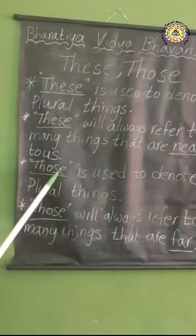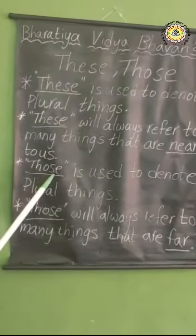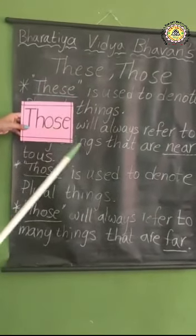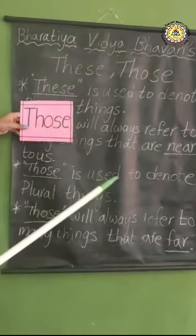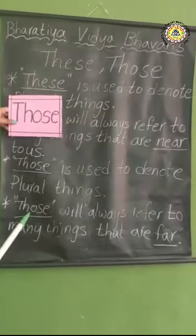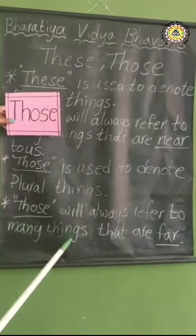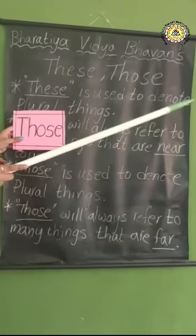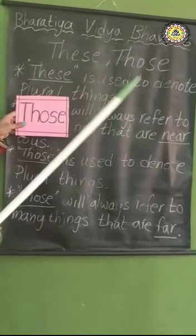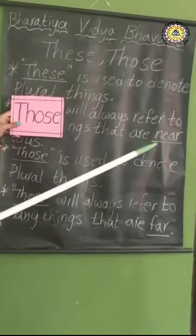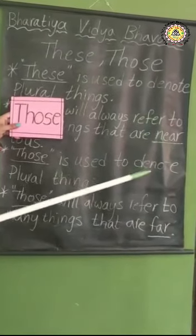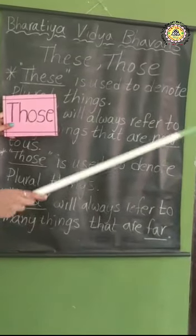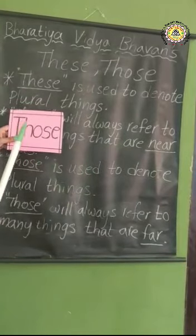Next: 'those'. Those is used to denote plural things. But what is the difference? Those will always refer to many things that are far — at a distance. For example, the tree is far from us. If one tree is there, use 'that'; more than one, use 'those'. Those is used when the things are far, meaning at a distance — there we have to use 'those'.